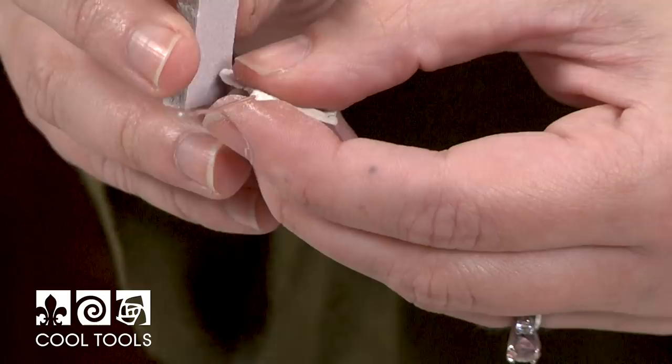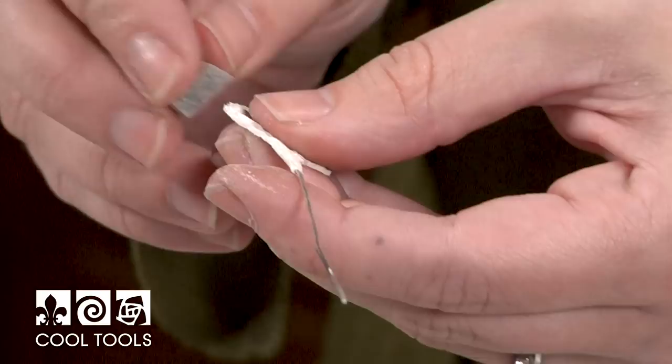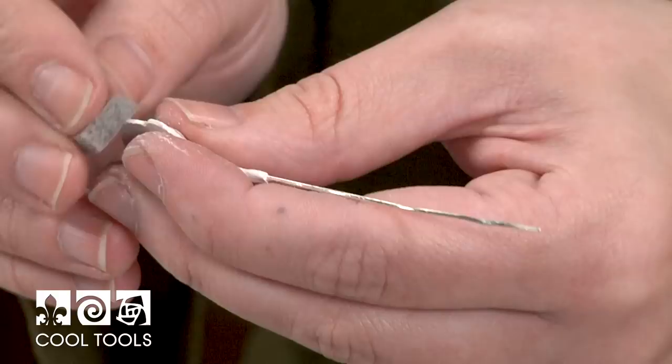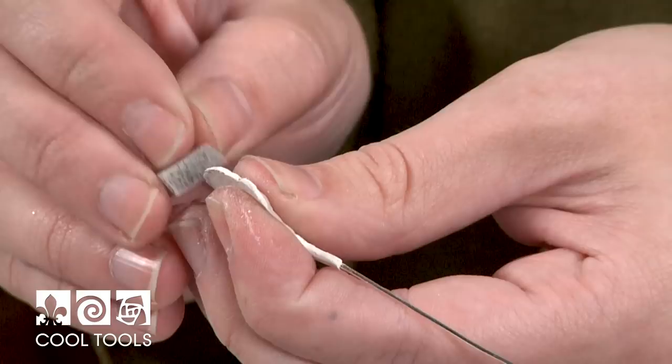But if you want to cut it larger so you have more to hold on to, that's entirely up to you. So I'm going to keep working my way around the super fine and then the ultra fine and then finally the micro fine on the edge too. And then we're going to talk about sanding the top surface of your clay.